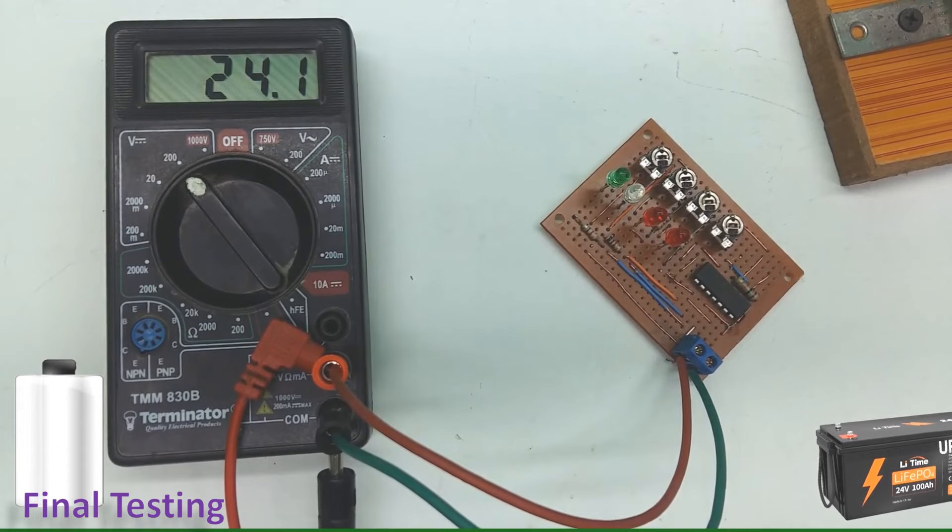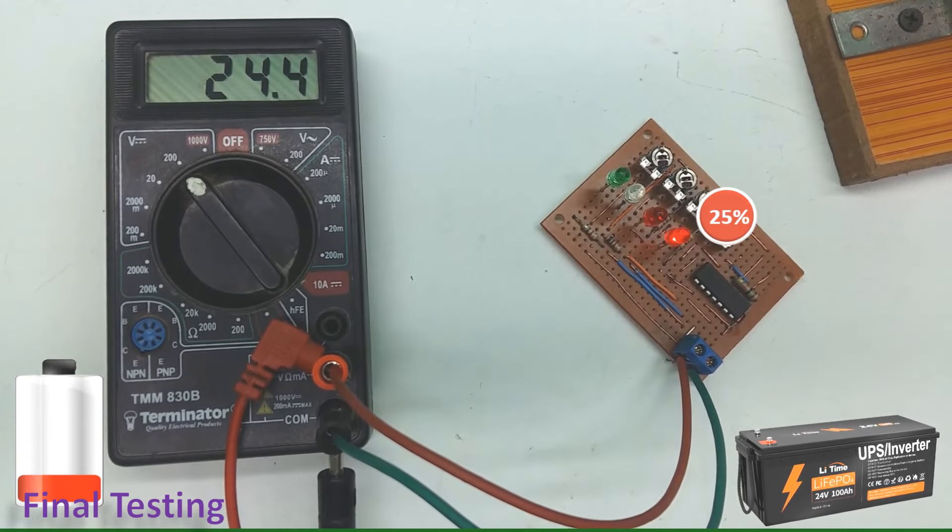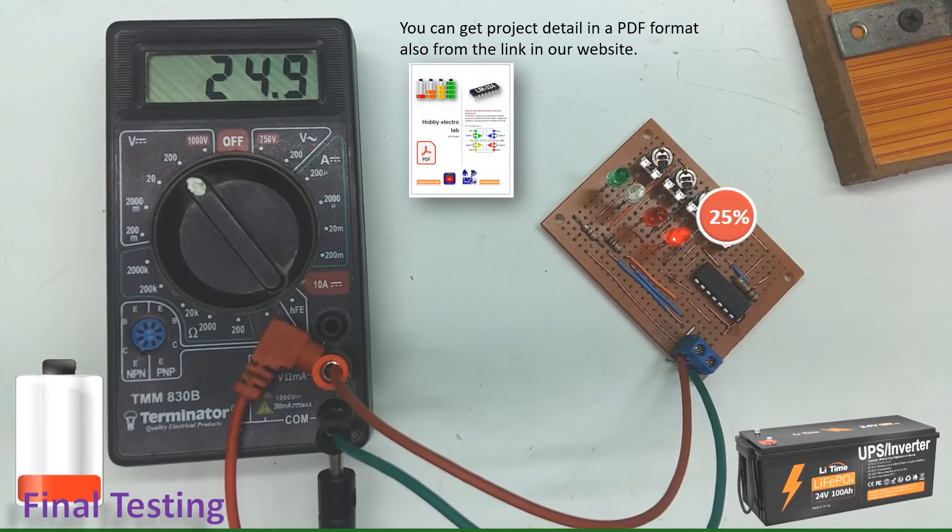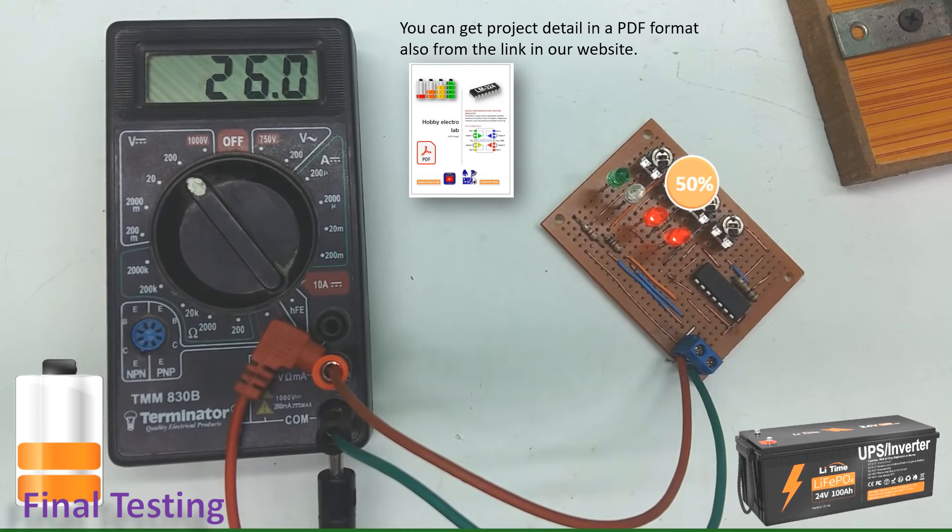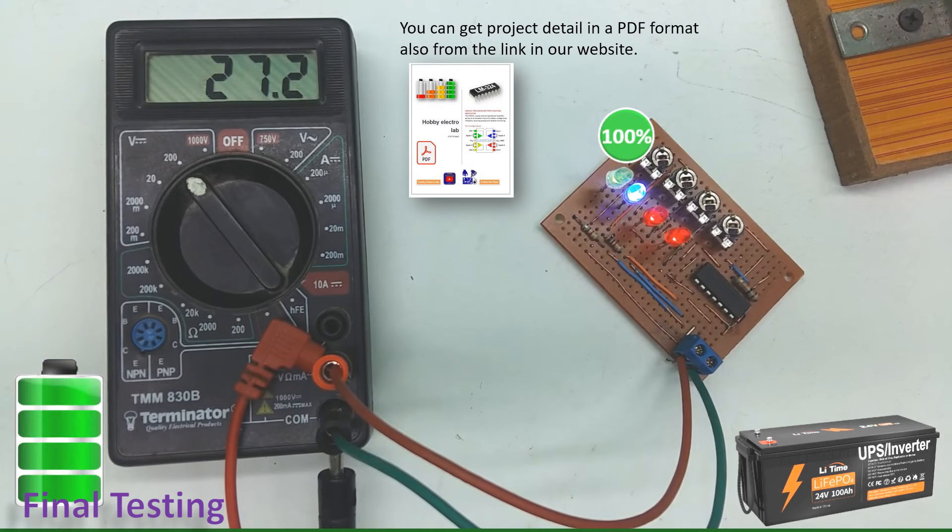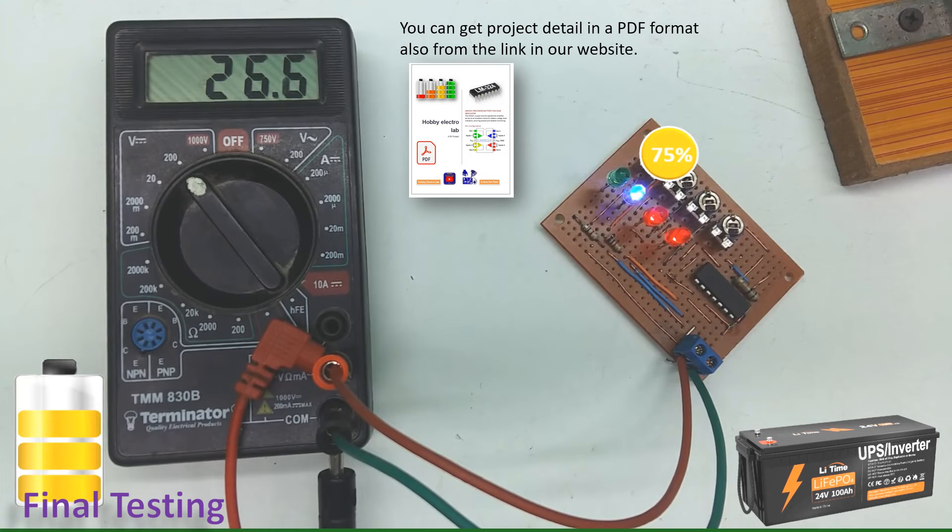We have now reached the testing phase of our customizable battery level indicator. As the battery voltage increases or decreases, the level indicator circuit activates or deactivates LEDs corresponding to the voltage level, providing a clear status of the battery.